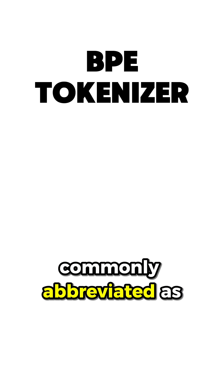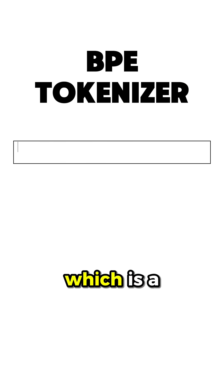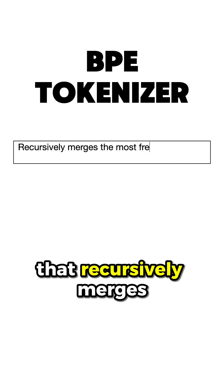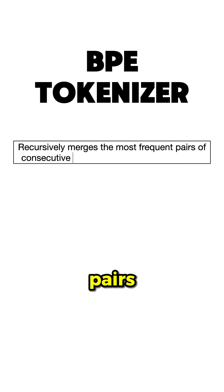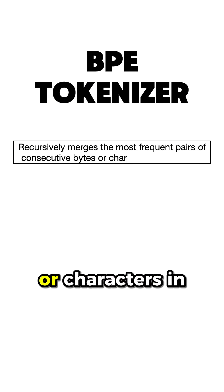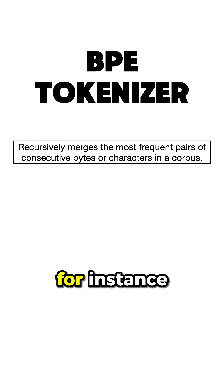Let's start with Byte Pair Encoding Tokenizer, commonly abbreviated as BPE, which is a subword tokenization algorithm that recursively merges the most frequent pairs of consecutive bytes, or characters in a corpus.